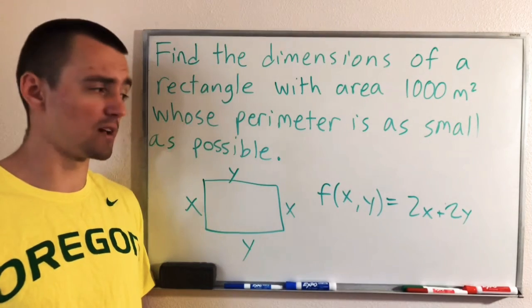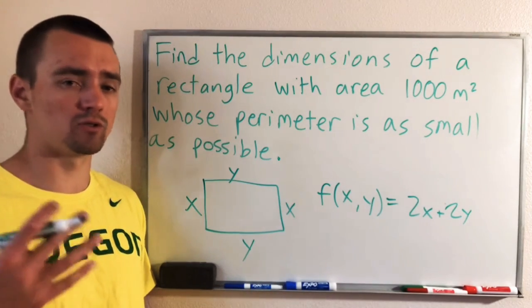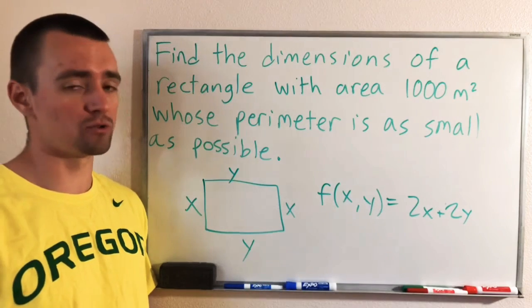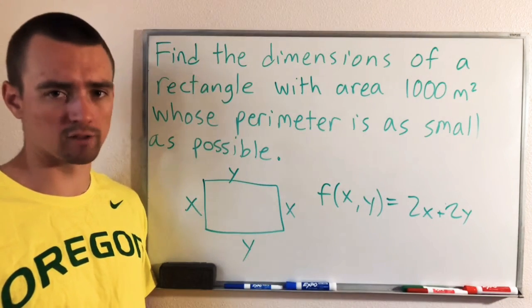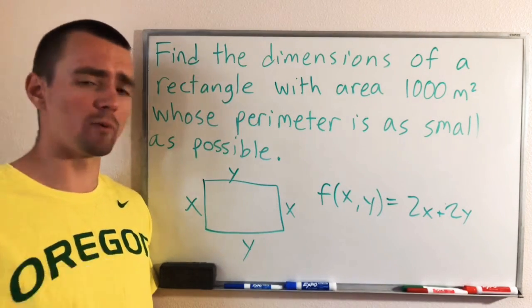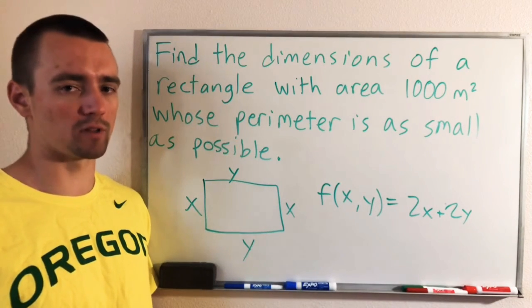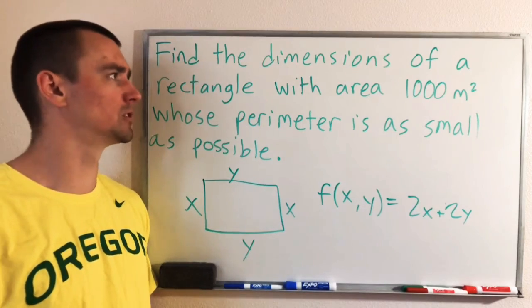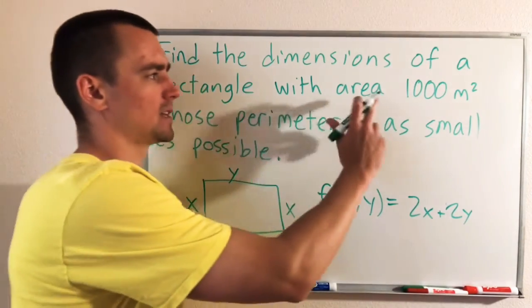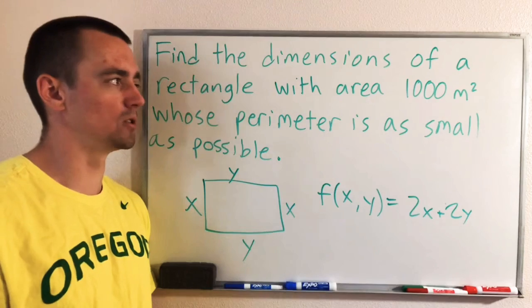But the problem is we have two variables in there. It's kind of challenging to optimize a two variable equation, or at least more challenging than a single variable. So what we can do is also think about what kind of restrictions we've been given about this rectangle. Well, really the only restriction we know is that its area is 1,000 meters squared.